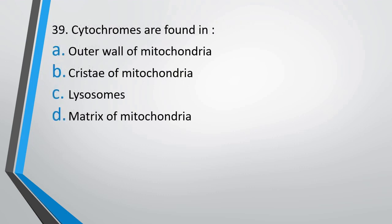Question number 39: Cytochromes are found in — the outer wall of the mitochondria, the cristae of the mitochondria, lysosomes, or the matrix of mitochondria? The correct answer is option B, the cristae of the mitochondria.